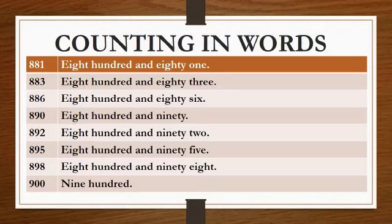Next is 892. E-I-G-H-T, eight, H-U-N-D-R-E-D, hundred, and 92, N-I-N-E-T-Y, ninety, T-W-O, two. You have to combine the unit of 10, that is 92.